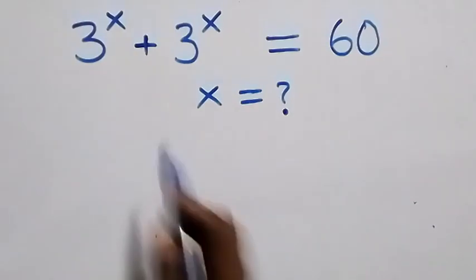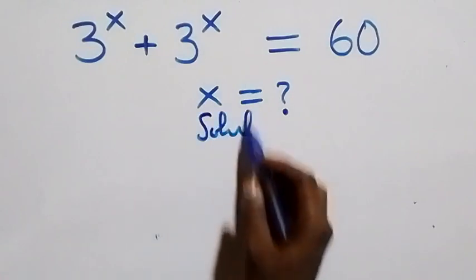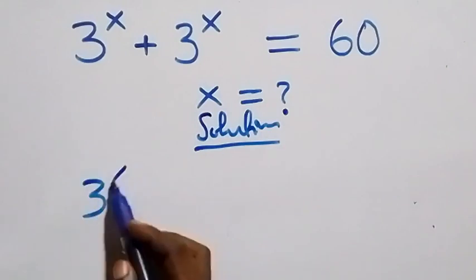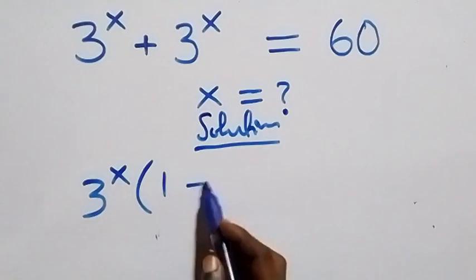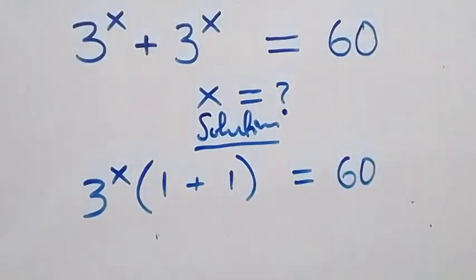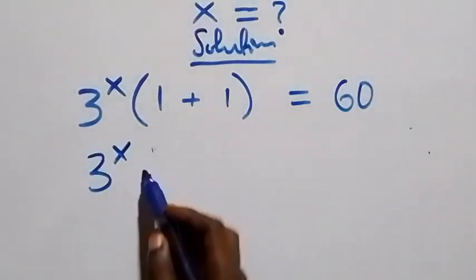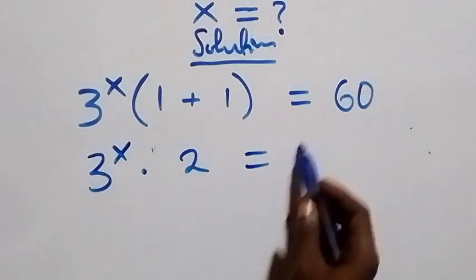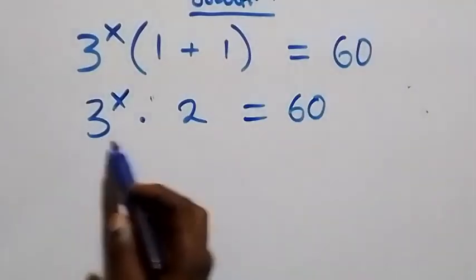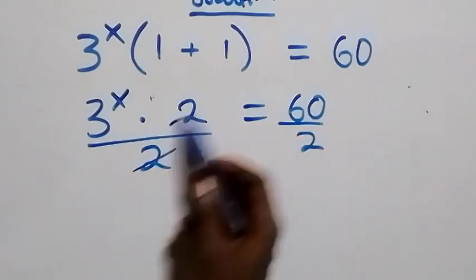Hello, you are welcome. How to solve this nice exponential equation. From what we are given, we can factor 3 raised to power x out, then we are left with one plus one, which equals sixty. From here, the next step we can write this as 3 raised to power x times two equals sixty. We divide both sides by two, so these twos cancel each other.